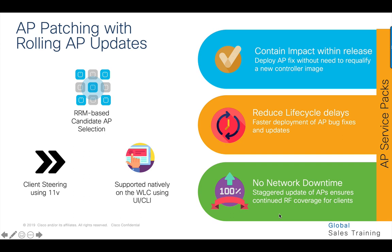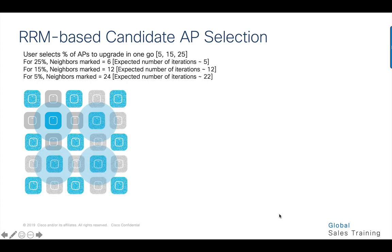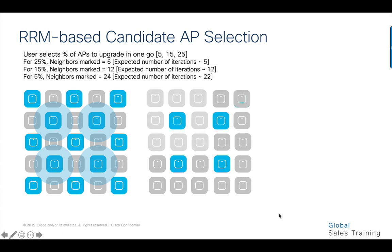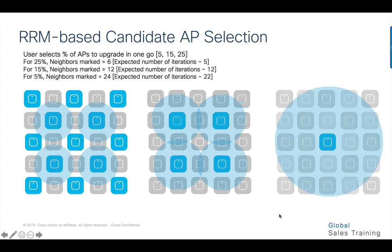The main highlights of this feature are that it's supported natively on the wireless controller using the UI and CLI. It also supports automatic candidate selection using the RRM-based AP neighbor information. The device auto-selects the candidate APs to be upgraded in each iteration based on the percentage of APs to be selected for upgrade chosen by the user — it can be 5%, 15%, or 25%, with the default being 15%.